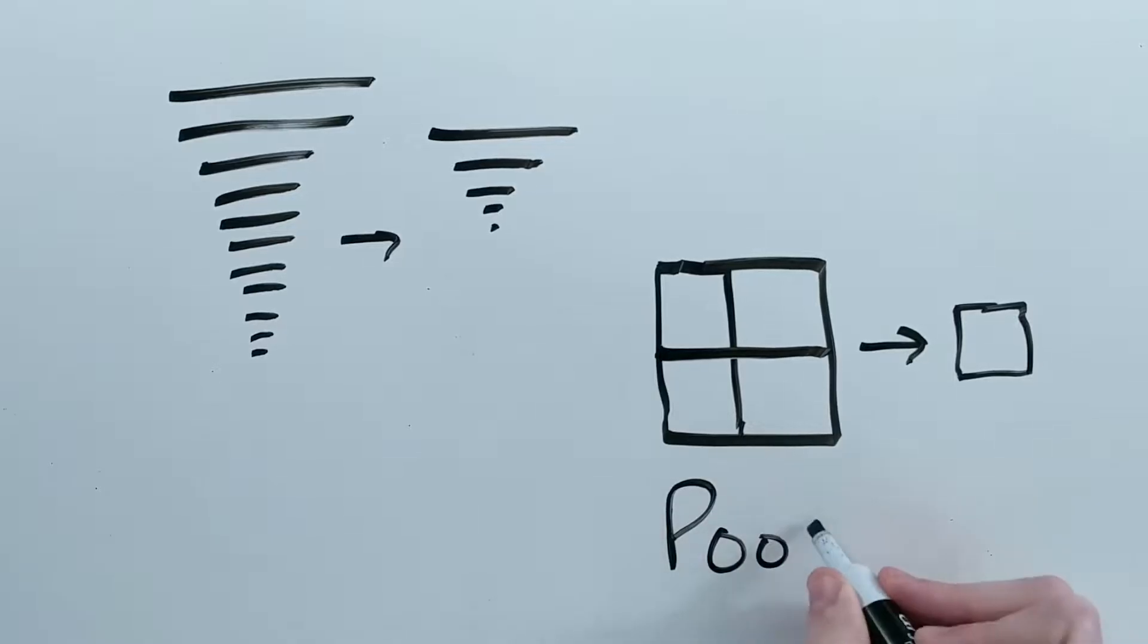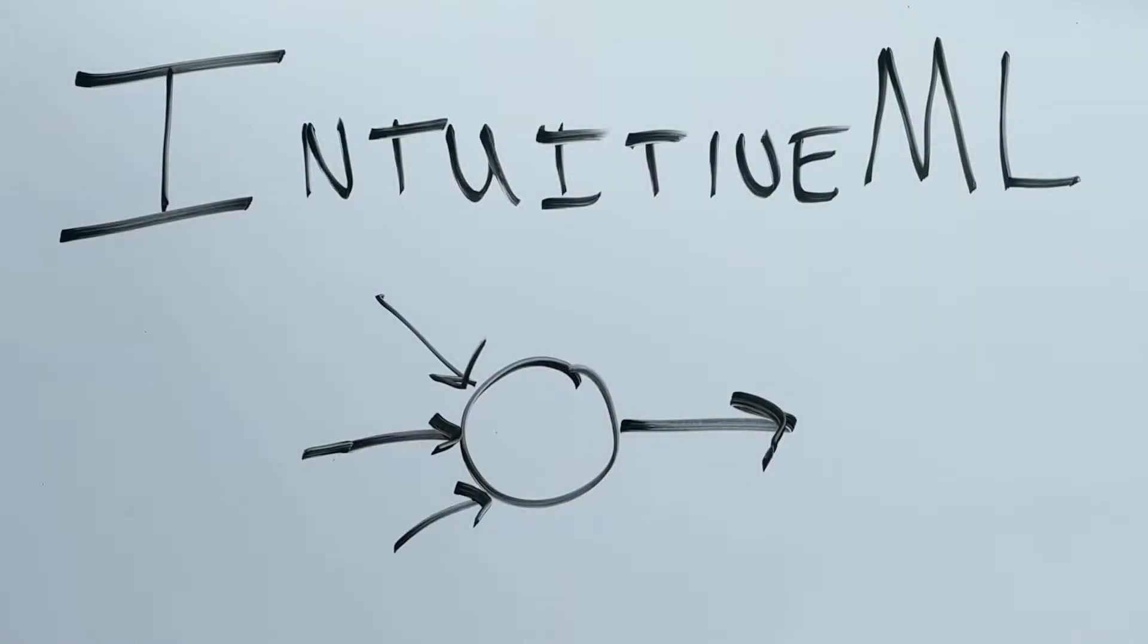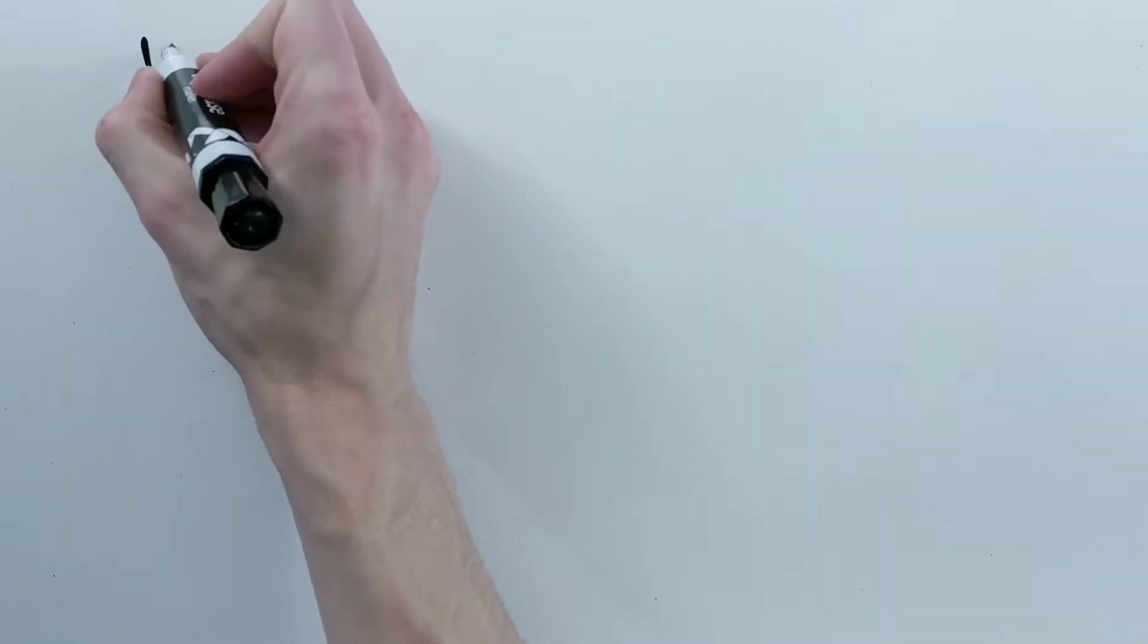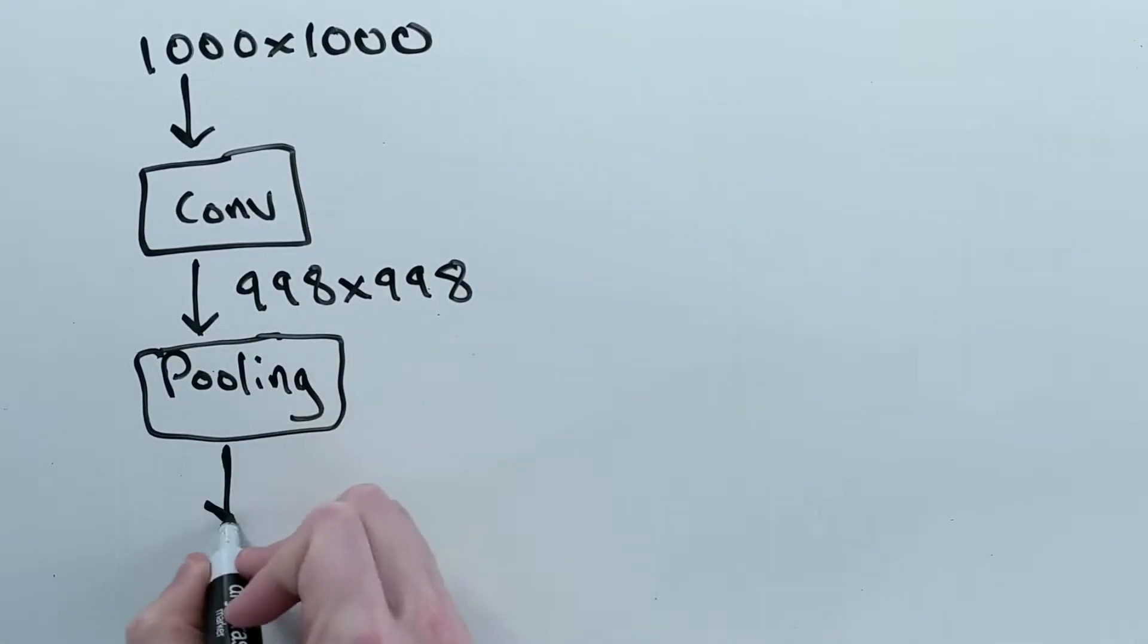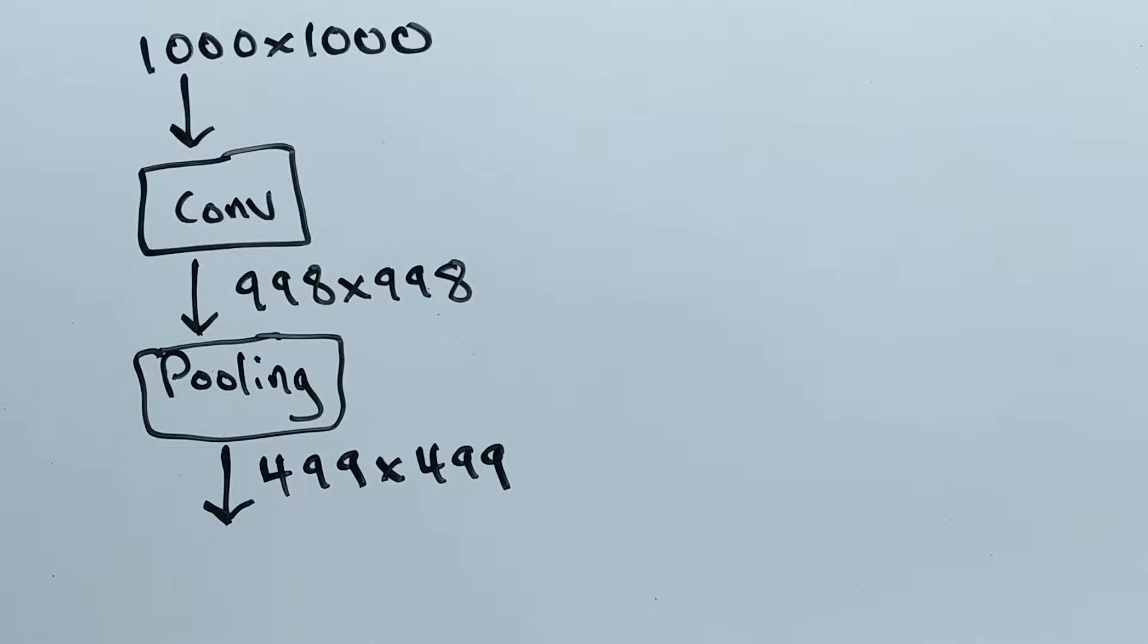One way is pooling. Pooling is a method to dramatically reduce the size of the intermediate features. If we reduce the size of the intermediate features, then we need less layers in order to cover the whole input, or to reduce the input down to something more manageable.